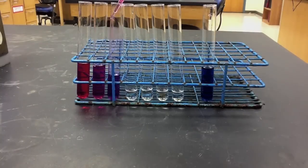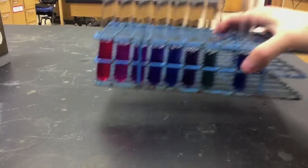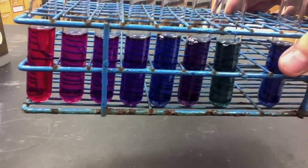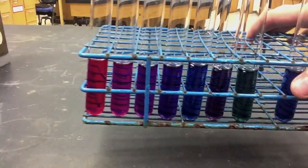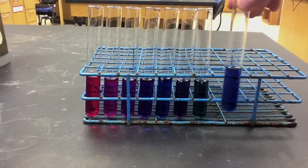As I add the anthocyanins to the buffers, I can begin to develop my colorimetric scale. And this colorimetric scale, where I have colors that correspond to each pH, will then allow me to determine the pH of my unknown solution.